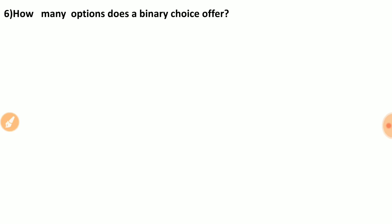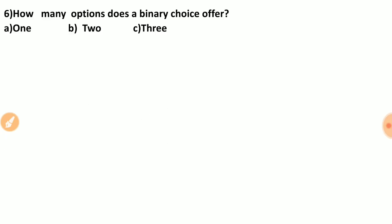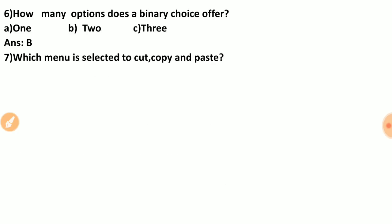Question six: how many options does a binary choice offer — one, two, or three? Binary refers to two digits, so the answer is two.